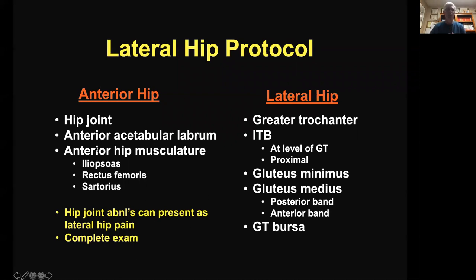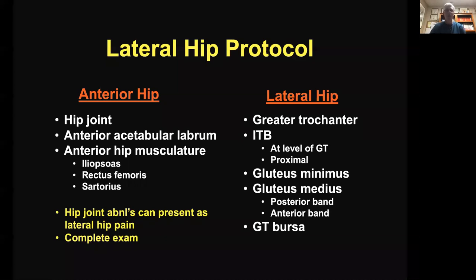There are two reasons why I choose to start with the anterior hip exam. The first is that I've learned over time that hip joint abnormalities can present as lateral hip pain. Probably once a month, a patient presents with lateral hip pain, has already had an injection into the lateral hip with suboptimal results, and is referred for a G-med tear. It turns out that hip osteoarthrosis is the underlying etiology, proven with an injection into the hip joint.